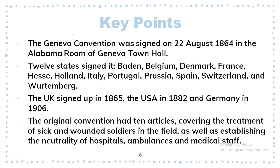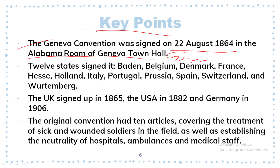The key points of the Geneva Convention. The Geneva Convention was signed on 22nd August 1864 in the Alabama room of Geneva Town Hall. Geneva is located in Switzerland.